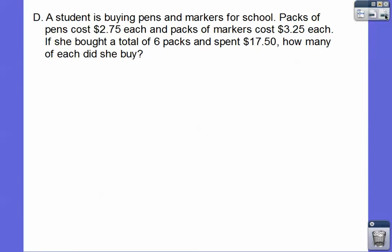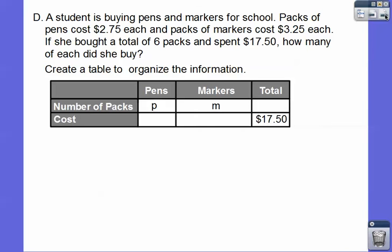Let's try another one. This one's just like that. A student is buying pens and markers for school. The packs of pens cost $2.75 each, and the packs of markers cost $3.25 each. If she bought a total of 6 packs and spent $17.50, how many of each did she buy? They give us a table to start filling in. P is going to be the number of packs of pens, and M is going to be the number of packs of markers. So P plus M is going to equal 6.